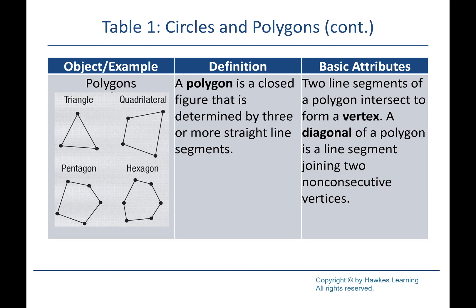The other thing to review briefly is polygons. Any figure we can make by connecting line segments together is called a polygon. You need three or more line segments — there's no way to take two and make a closed space. So three or more connected line segments form a polygon.